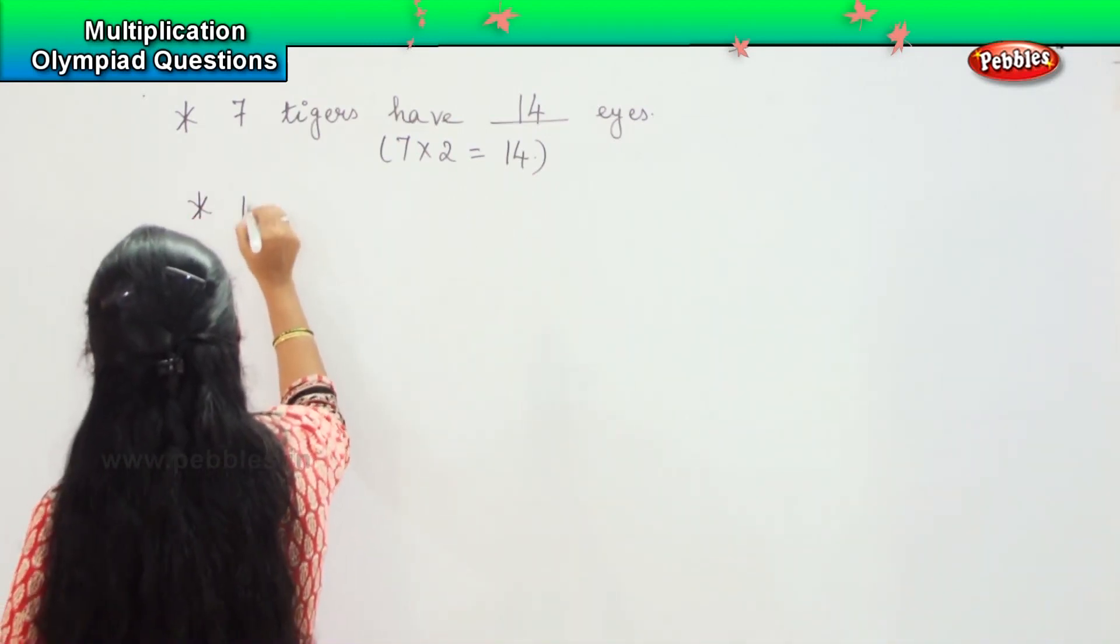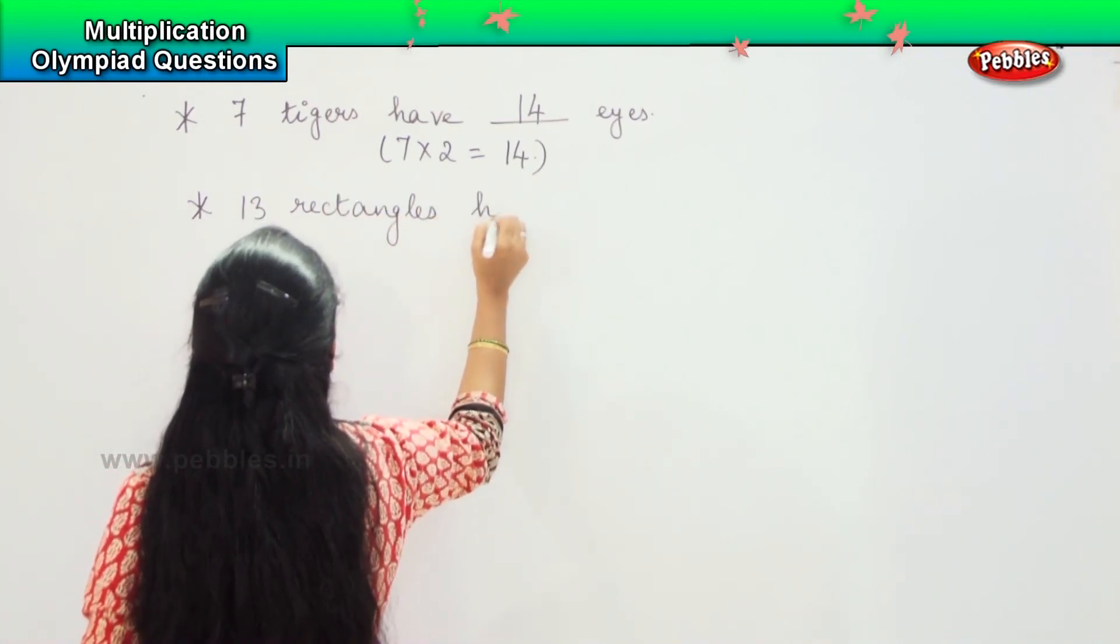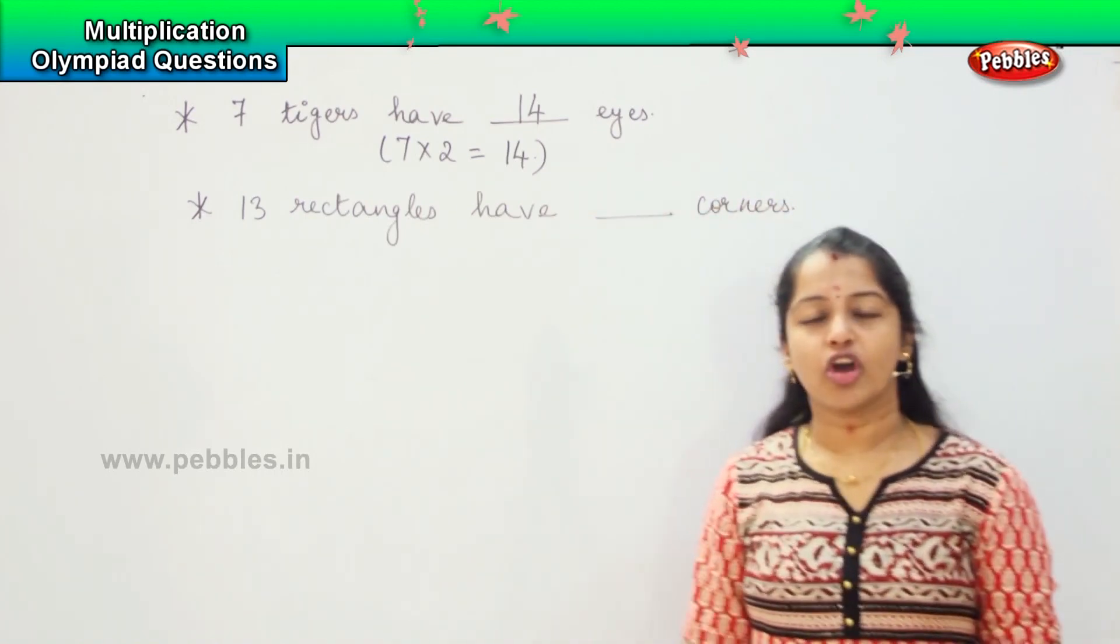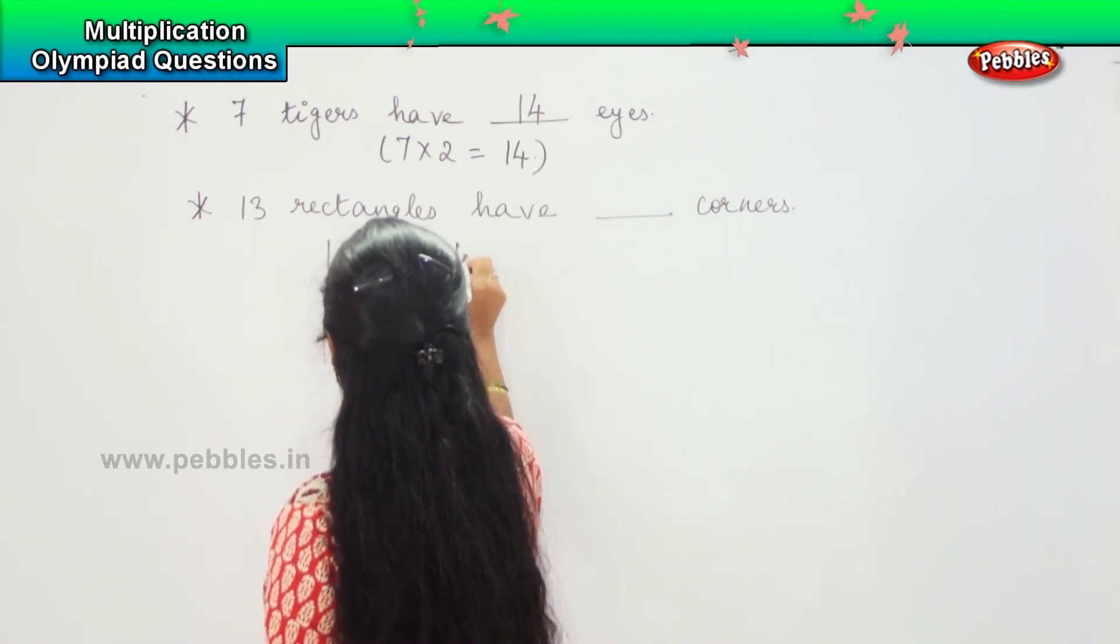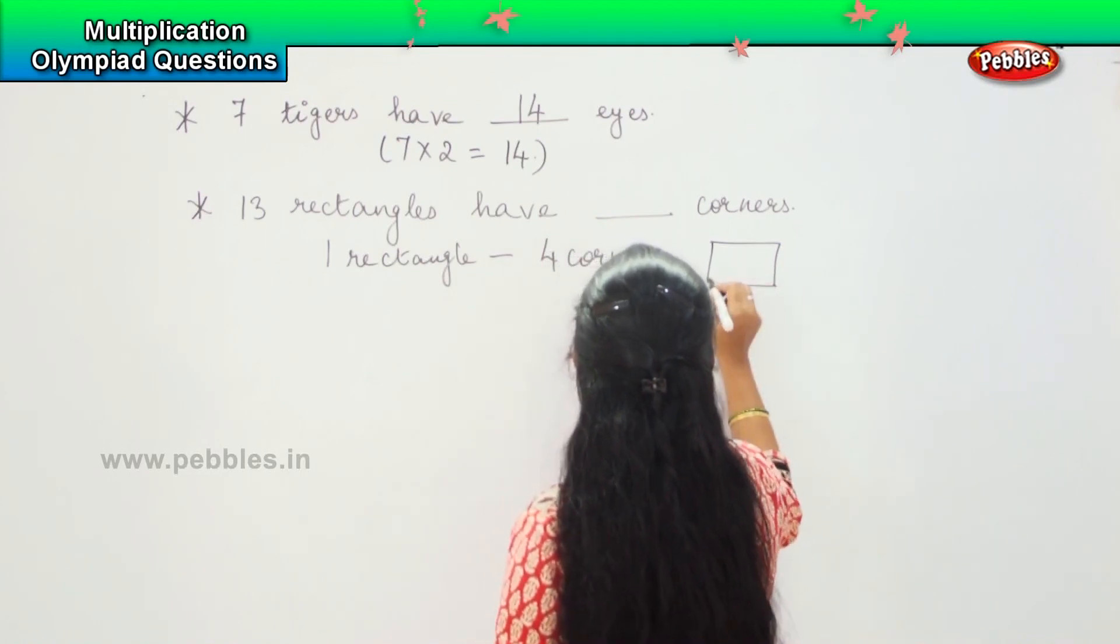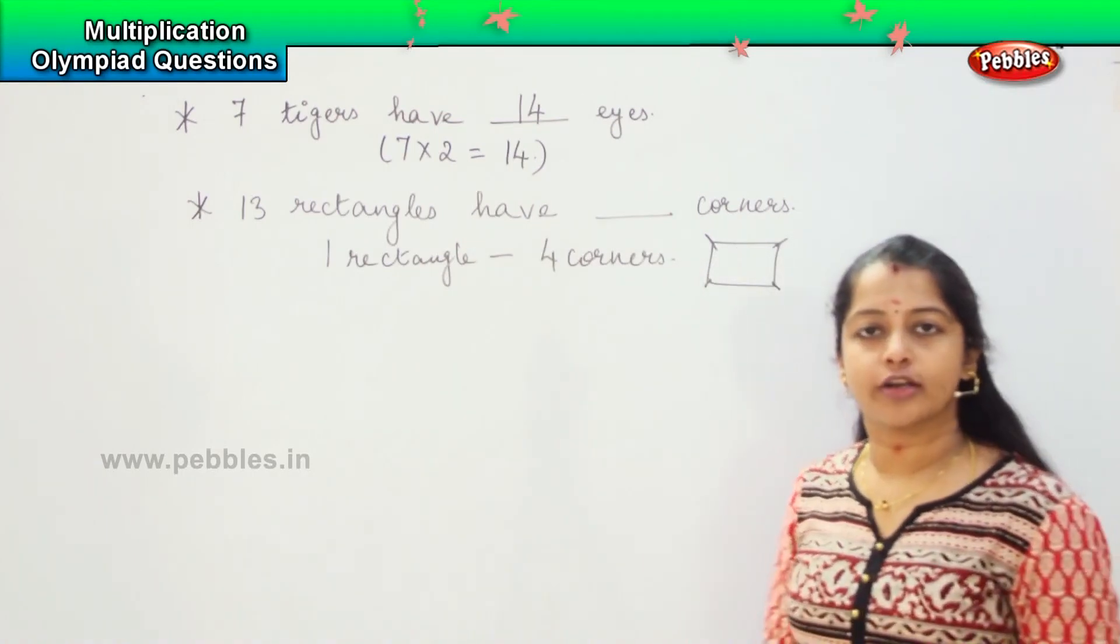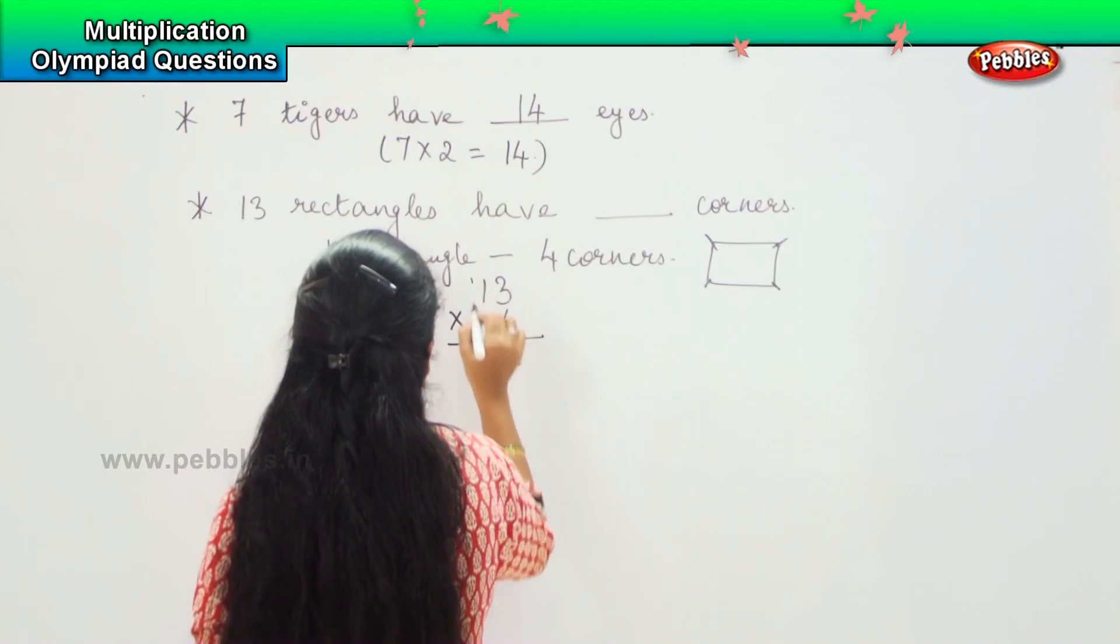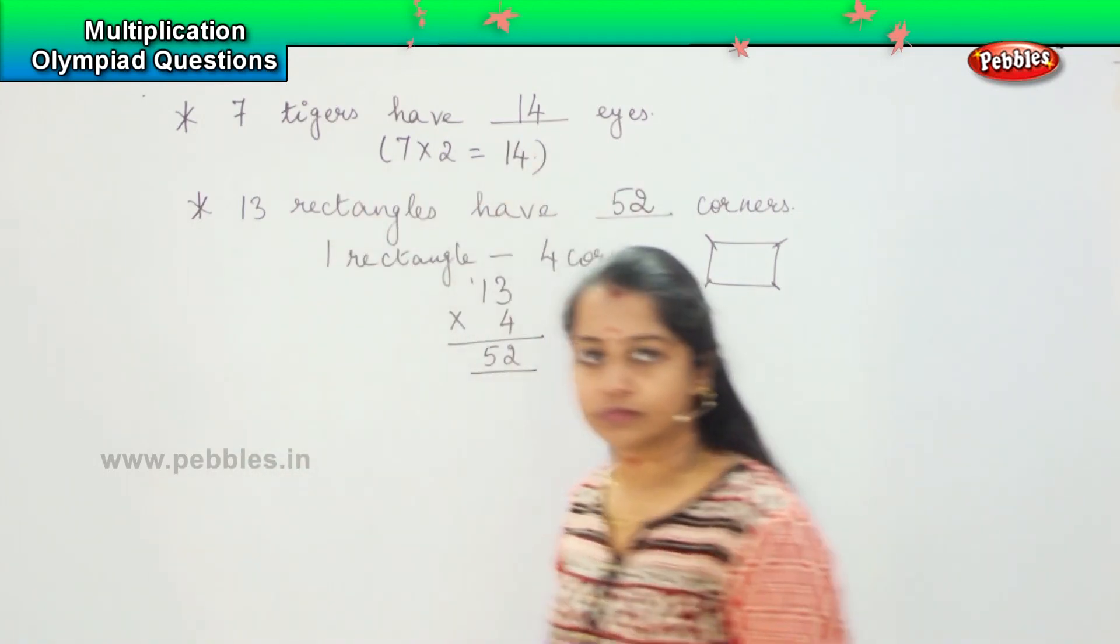The next question. 13 rectangles have dash corners. How many corners does 1 rectangle have? 1 rectangle has 4 corners, right? 1, 2, 3, 4. So 1 rectangle is having 4 corners. We need to find the corners for 13 rectangles. So how will we do? 13 into 4. 3 fours are 12, 1. 1 four is 4, 4 plus 1 is 5. So my answer is 52.